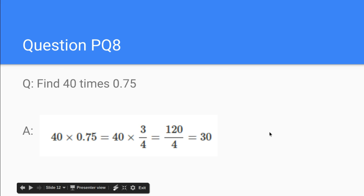Last question. Question 8. 40 times 0.75. If you remember the question with 0.25 is a quarter, well, 0.75 is three times that. So obviously this 0.75 is really just three divided by four. So you're doing 40 times three, which is 120, and then you divide by four. 120 divided by four is 30.